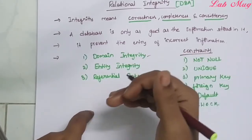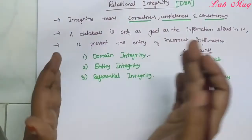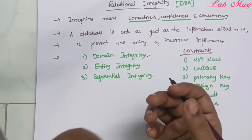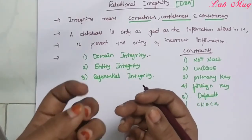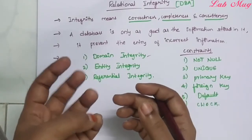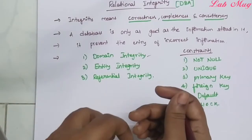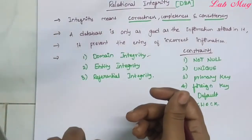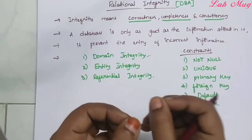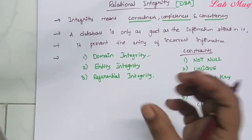Entity integrity: different domains and a number of attributes are combined to form one entity. For example, from previous classes, the student entity — student entity has different attributes such as student number and student name with their own domains. But the main entity is student. Entity integrity rules: it is easy to identify each and every entity in the database. Every entity in the database can be found and identified.